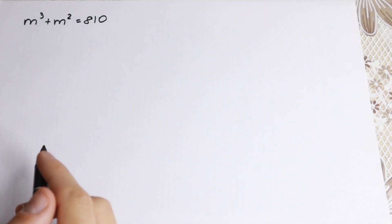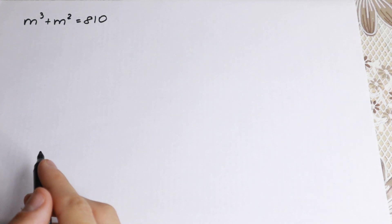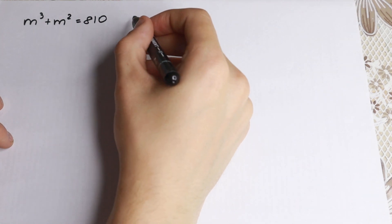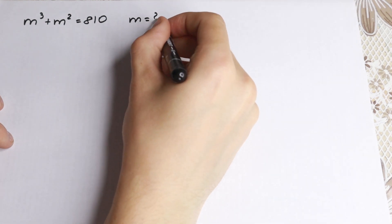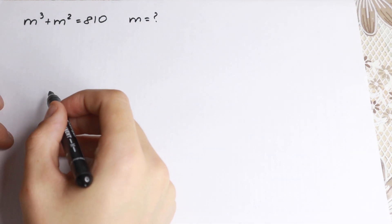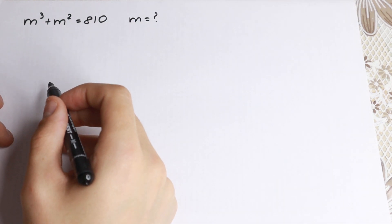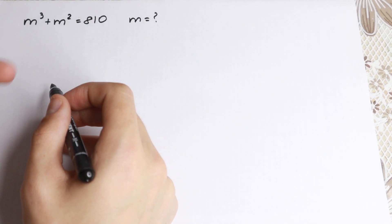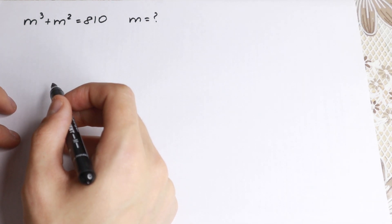Hello my friend, happy to see you here — really interesting problem today. We have m³ + m² = 810 and we need to find m. A lot of students have a little bit of difficulty with this problem because we have a cube and they don't know how to factor it or find m.